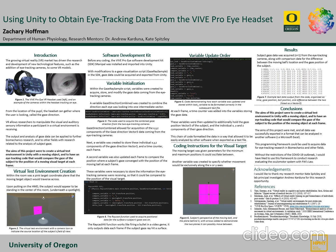The aims of this project were to create a virtual test environment in Unity, which is a program development platform, with a moving object, and to have an eye tracking code that would compare the gaze of the subject to the position of a moving visual target at each frame.